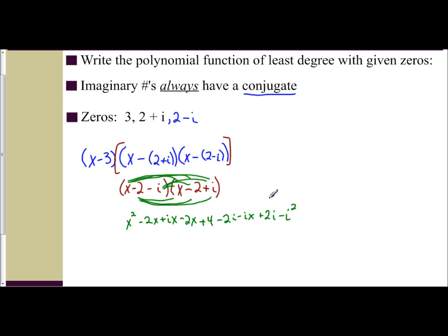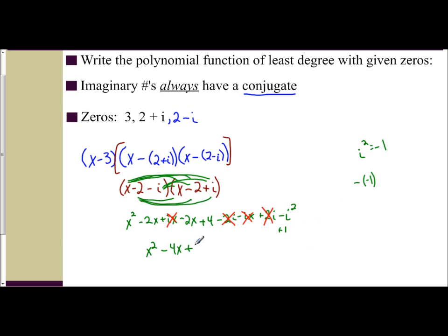We see positive ix and negative ix cancel, and negative 2i and positive 2i cancel. Since i squared is negative 1, negative i squared becomes positive 1. Combining terms: x squared, minus 2x minus 2x gives minus 4x, positive 4 plus 1 gives plus 5. So the trinomial from multiplying the two complex factors is x squared minus 4x plus 5.